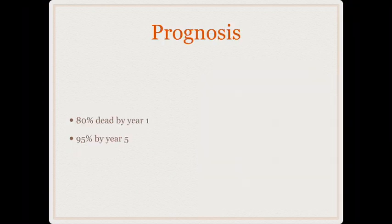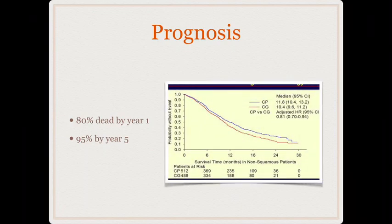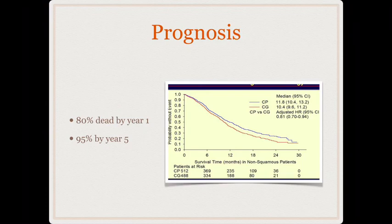Regarding prognosis: once a patient is diagnosed with lung cancer, 80% will be dead by the end of one year — they won't make it to the next year. By the end of five years, 95% of all patients with lung cancers will be dead. Lung cancer is a very lethal disease.